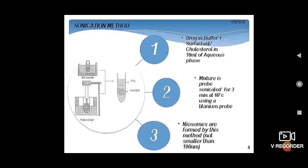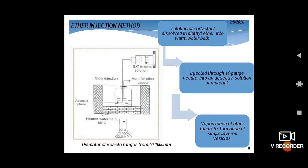In the sonication method, the drug is added to the aqueous phase, then surfactant and cholesterol are added. The mixture is probe sonicated for three minutes at 60°C using a titanium probe. Niosomes formed by this method have a size not smaller than 100 nanometers.